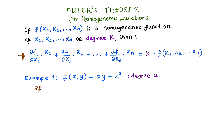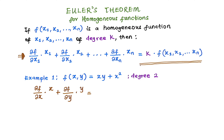We know that f(x, y) = xy + x². We set up Euler's theorem: take the partial derivative of the function with respect to x, multiply it by x, plus the partial derivative with respect to y, multiply it by y, and that should equal the degree of homogeneity — which we represent as k, since we're treating it as unknown — multiplied by the function f(x, y).